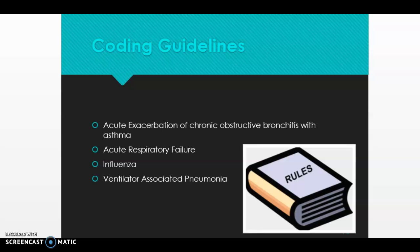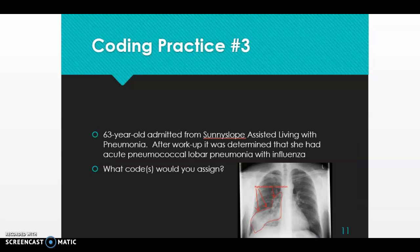Now let's jump into a scenario and apply some of these guidelines. Our first scenario: a 63-year-old patient admitted from Sunny Slope Assisted Living with pneumonia. After workup, it was determined she had acute pneumococcal lobar pneumonia with influenza. The first thing we always do is identify our main terms — here we have pneumonia and influenza. Do we code these together or separately? Let's look them up in the index.